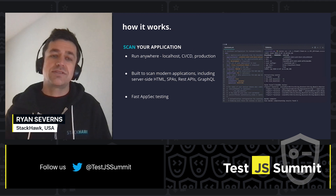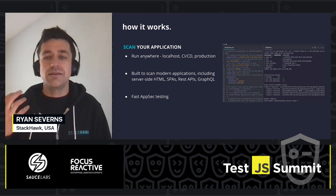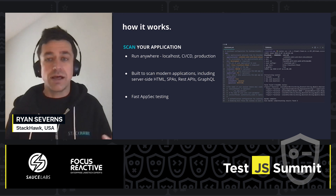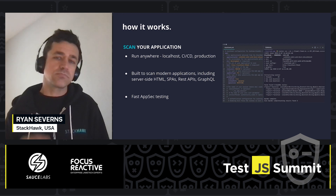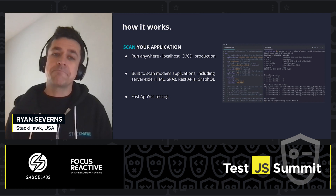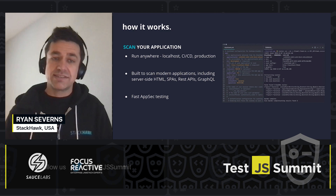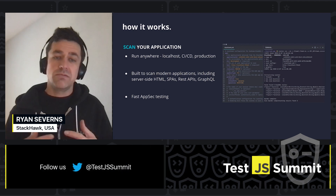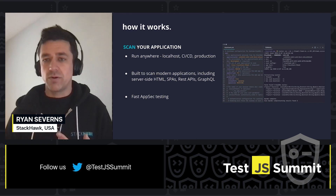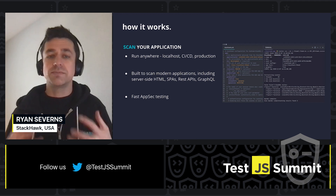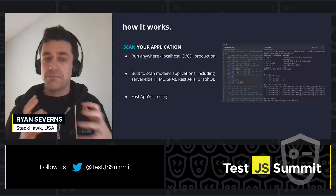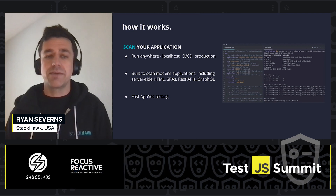You start with scanning your application. We have a YAML-based configuration file and a Docker-based scanner. It allows you to run the scans anywhere — you can run it locally, run it in CICD, or point it at your production environment and run the scan. It crawls the app. We pull in OpenAPI spec, GraphQL introspection endpoint. Ultimately, we were built for scanning modern applications and hit both the application and the underlying APIs.